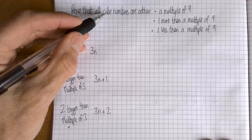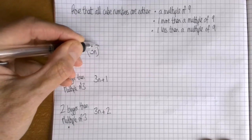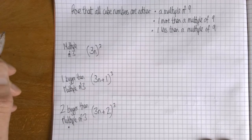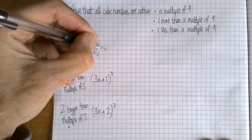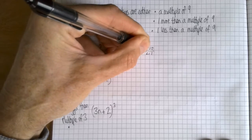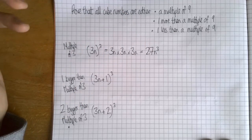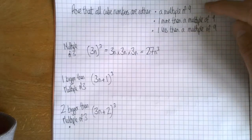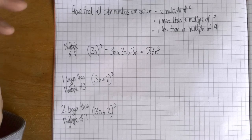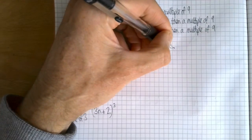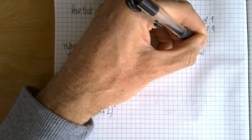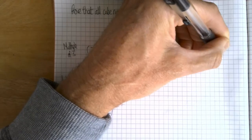And that would be 3n plus two. Obviously three bigger than a multiple of three you'd be back to another multiple of three again. So the number that we are cubing could either be a multiple of three, one bigger, or two bigger, and all numbers fall into one of those categories. So we are cubing these numbers. I'll do one for you, I'll do this one: 3n cubed. That's 3n times 3n times 3n, so that's 27n cubed. Now is that a multiple of nine, one more than a multiple of nine, or one less than a multiple of nine? Well, if it's a multiple of nine I can write it as nine times something and I can. This one is a multiple of nine.